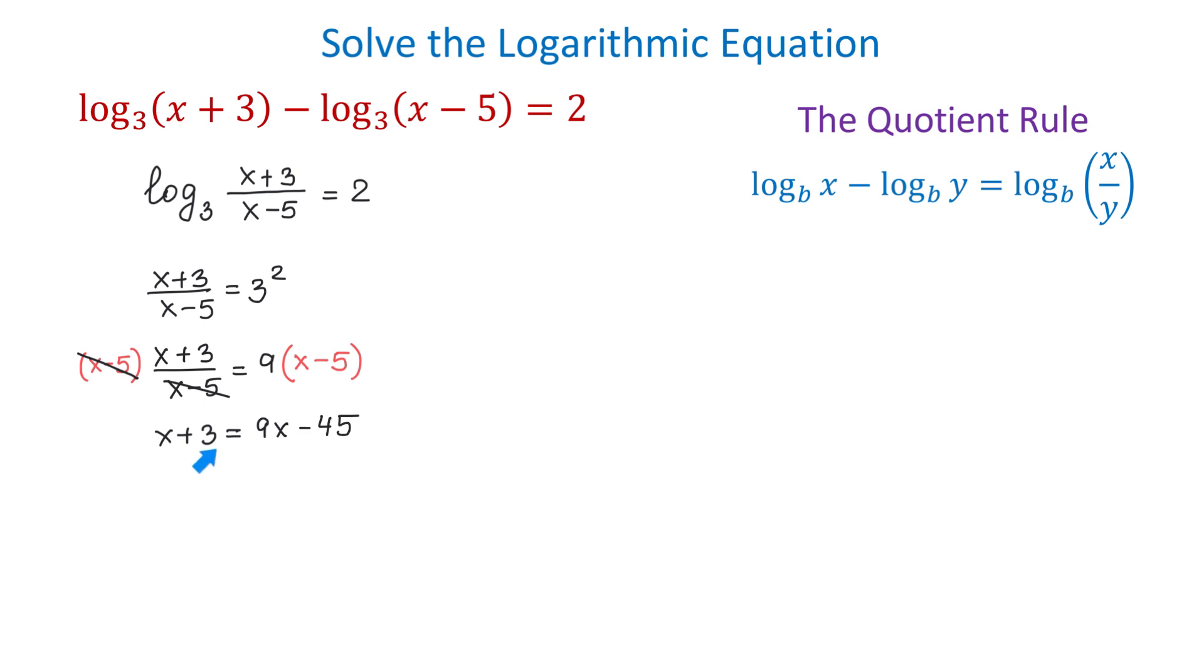From here, I will have both constants on the left side and x on the right side. That will be 3 plus 45 equals 9x minus x. Then, 48 equals 8x. If we divide both sides by 8, we will get that x equals 6.